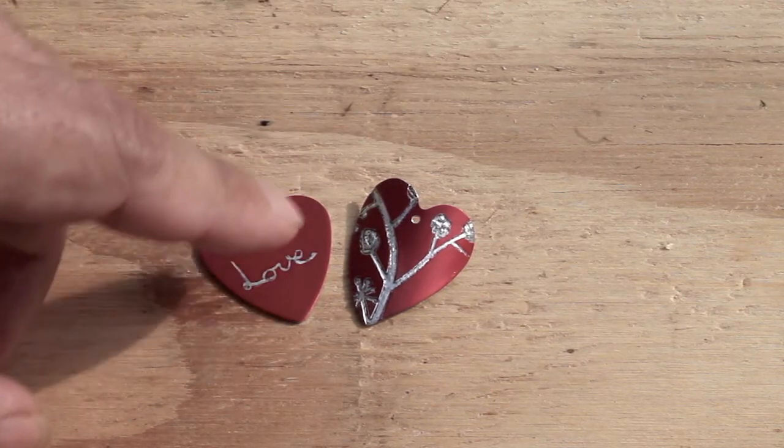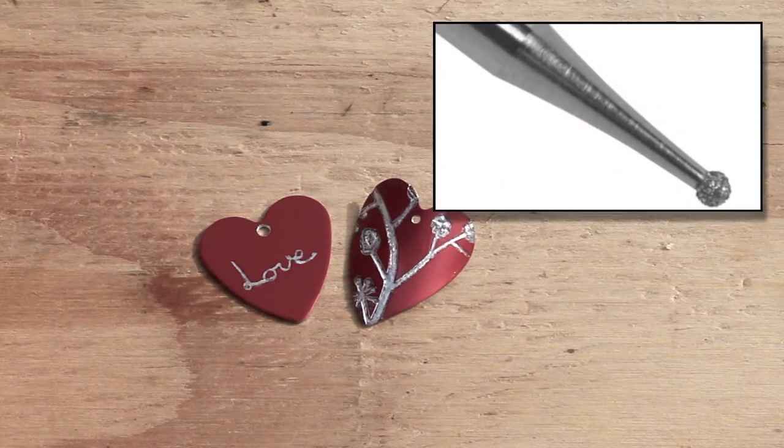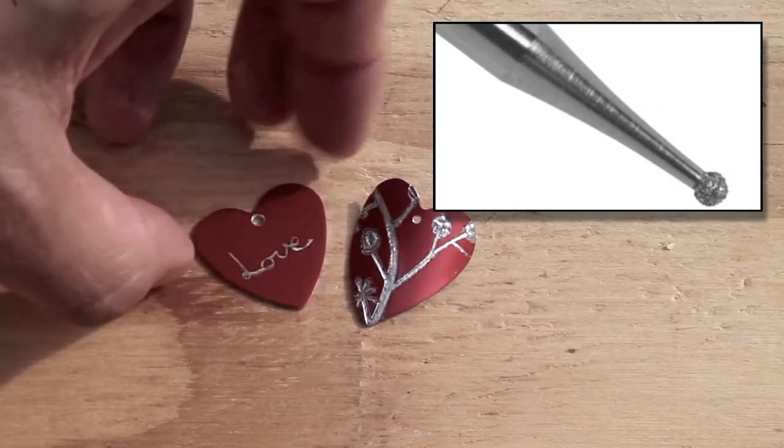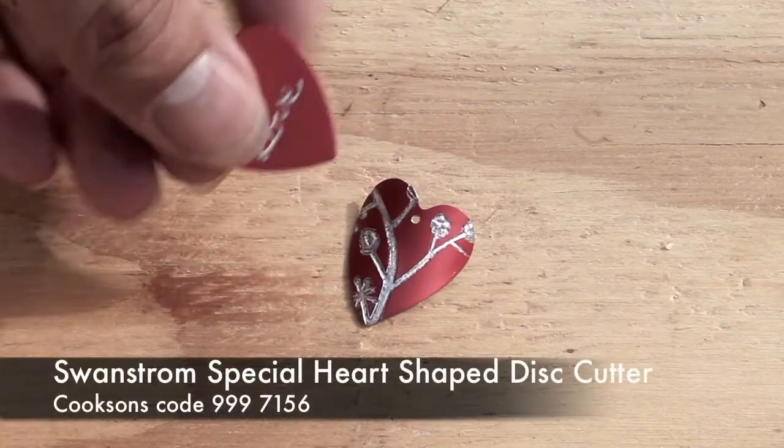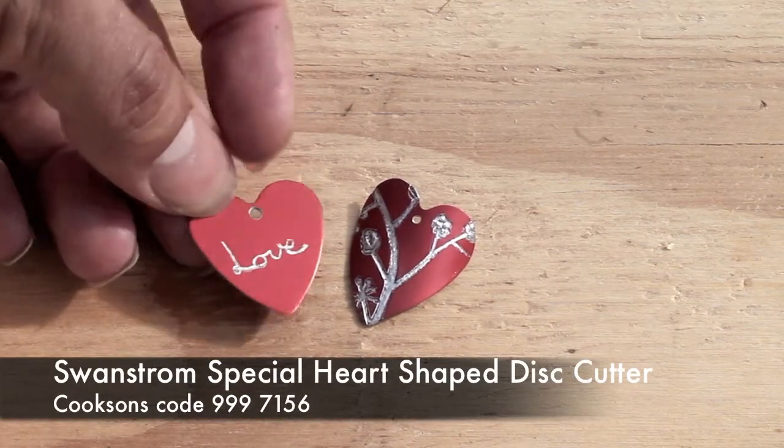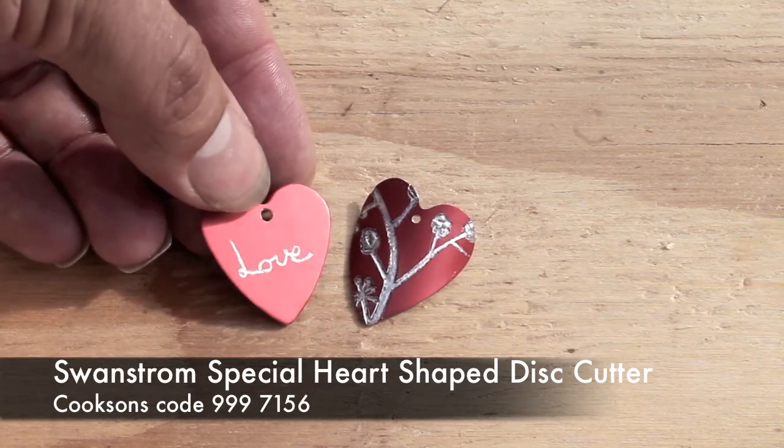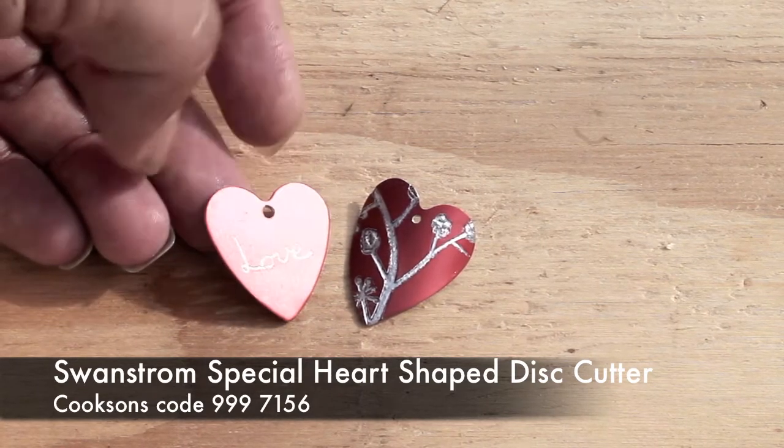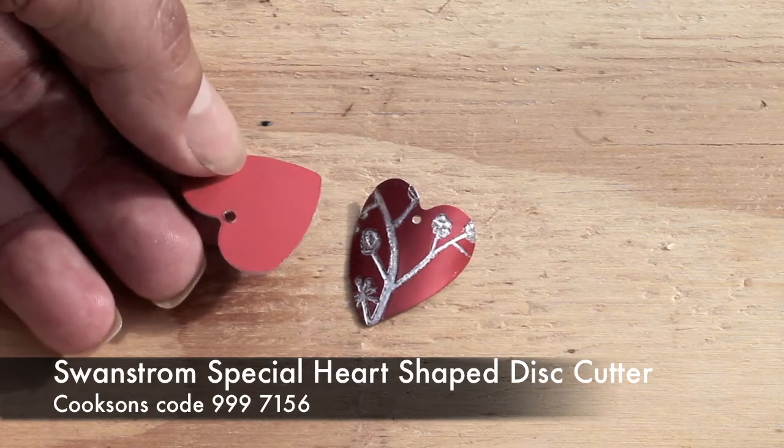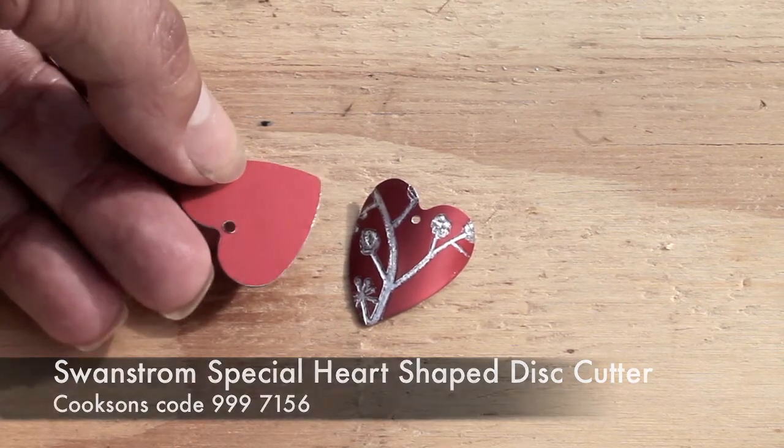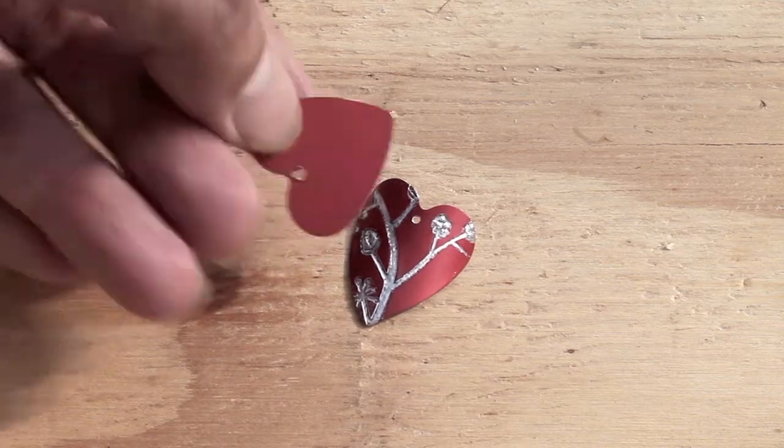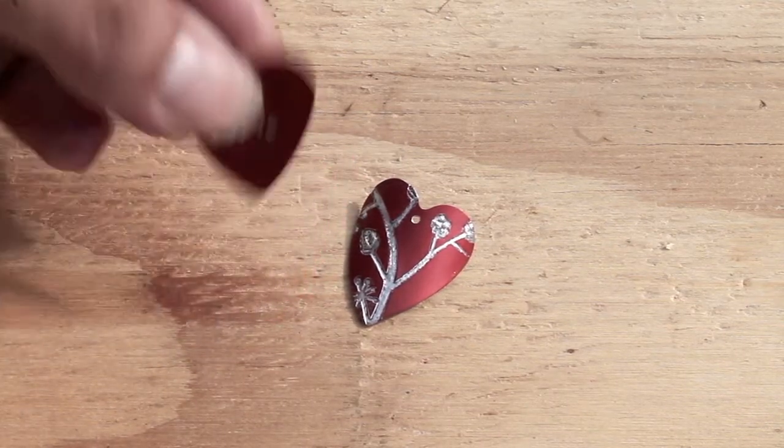These are just little diamond burrs that I've got on the flex shaft. This was punched out using a Swanstrom heart shape cutter. I punched it out and just engraved love on the front. I'm not the best engraver in the world, but maybe you were. And look at the back, that's been punched out, it's been drilled, and there's not a mark on it. The surface really is quite tough.